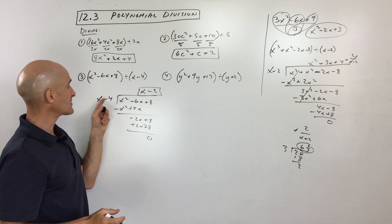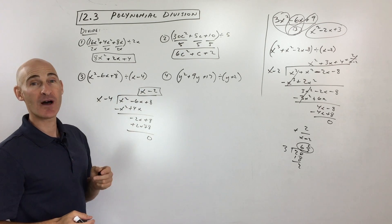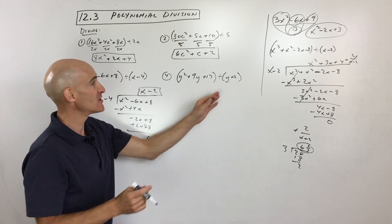So our final answer is just going to be x minus 2. Now if you want to check your work, if you take x minus 2 times x minus 4 and you foil all that out, you're going to get back to the original polynomial. Okay, last example. See if you can do this one.